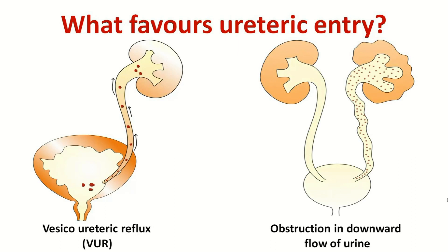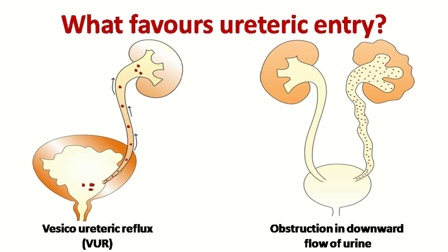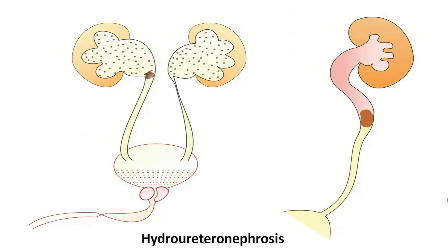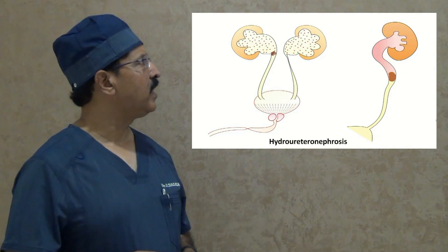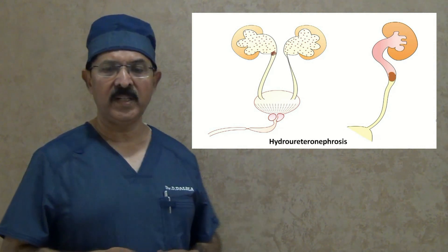And if the downward peristalsis of the ureter is sluggish — not effective — this happens whenever you have an obstruction in the ureter causing urine stagnation, creating conditions like hydroureter. Urine does not flow down the way it should, so if bacteria gain entry into that kind of segment, they can easily stay there, multiply in large numbers, and create nasty infection. Common examples causing hydroureter are stones blocking the pelviureteric junction or ureter, or pelviureteric junction obstruction.